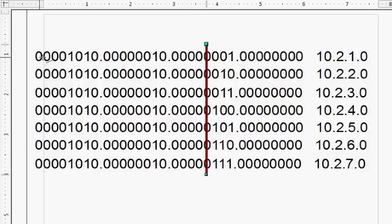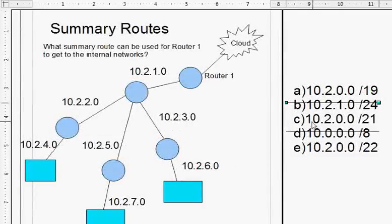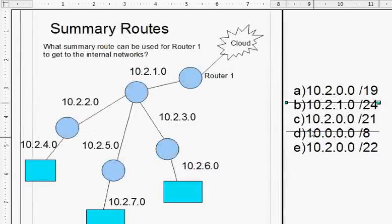So then you just count it. So that's eight bits here, 16, 17, 18, 19, 20. It's the 21st bit going from left to right that they all have in common. And that means the summary route is 10.2.0.0 slash 21. And we look one more time just to be sure here - you got eight, 16, 17, 18, 19, 20, 21. So the correct answer: 10.2.0.0 slash 21.